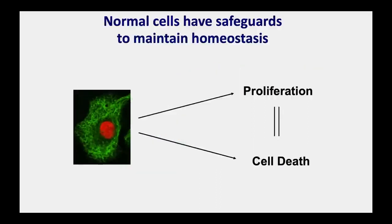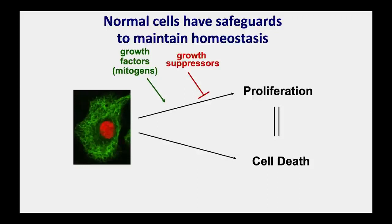How does a tissue maintain homeostasis? Normal cells have safeguards to control these processes. There are growth factors, also called mitogens—because they induce mitosis, which is part of cell division—that promote cell proliferation. Likewise, there are growth suppressors that block cell proliferation, and they are in careful balance with each other. Similarly, there are death signals that promote cell death and survival factors that inhibit cell death.